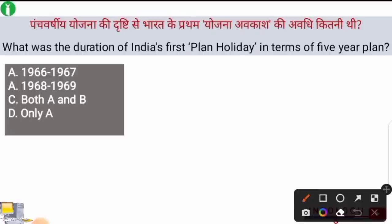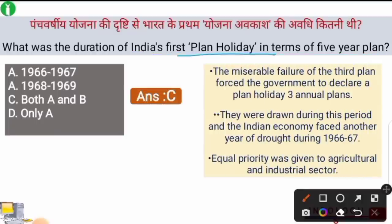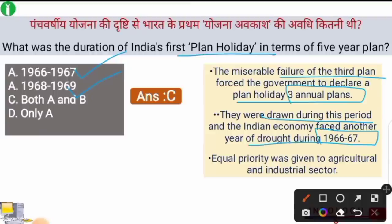Next question: What was the duration of India's first plan holiday in terms of Five Year Plans? The right answer is option C — both A and B, meaning 1966–67 and 1968–69. The three annual plans were 1966–67, 1967–68, and 1968–69. The miserable failure of the Third Five Year Plan forced the government to declare a plan holiday of three annual plans. During this plan holiday period, equal priority was given to both agricultural and industrial sectors.